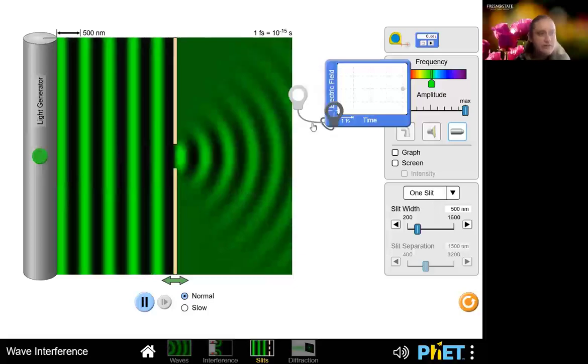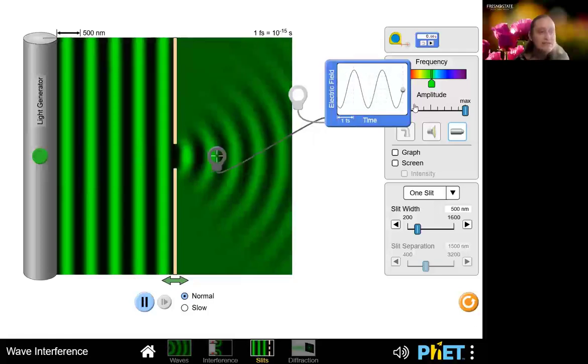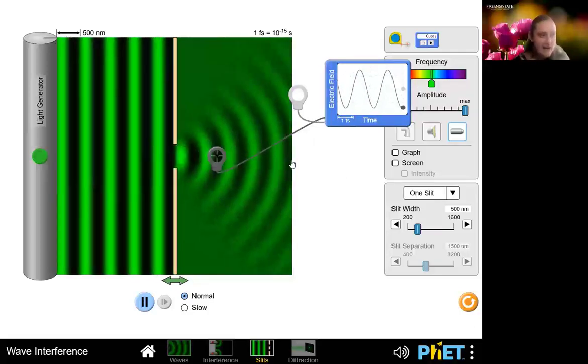So it'll show me a plot of the field versus the time. If I stick it just after the slit here, we can see that it oscillates up and down as the wave passes through.